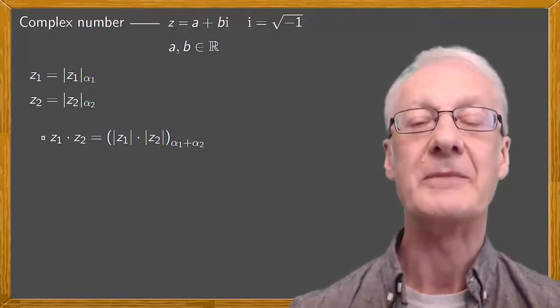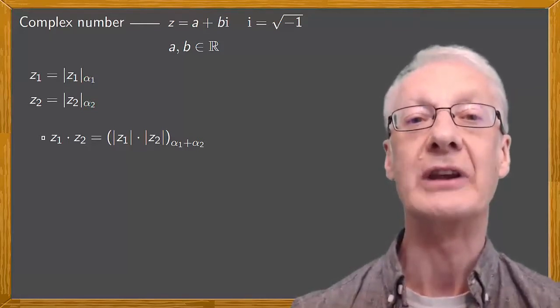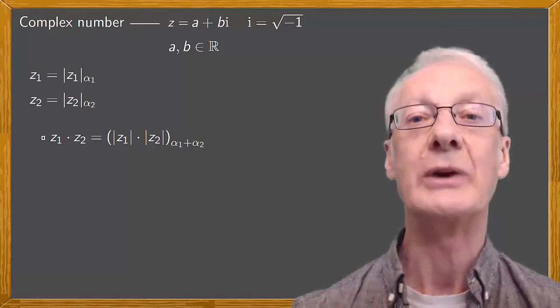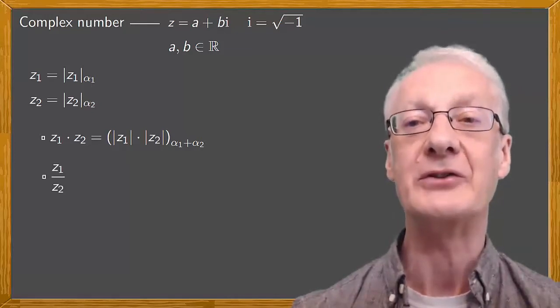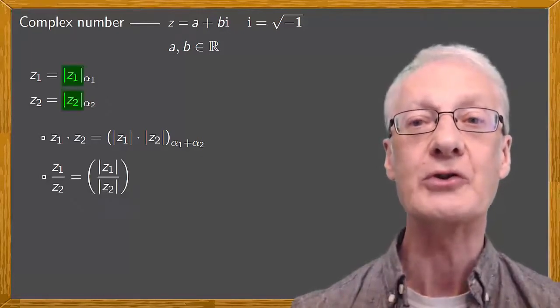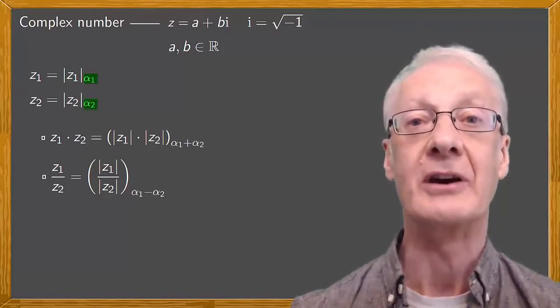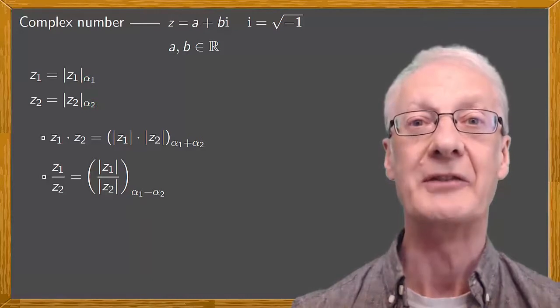For division, it's very similar. Using the formulas for the sine and the cosine of the subtraction of angles, we get that z1 divided by z2 is the complex number with a modulus that's the quotient of the moduli, and an argument that's the difference of the arguments. Thanks to trigonometry, it really is that simple.